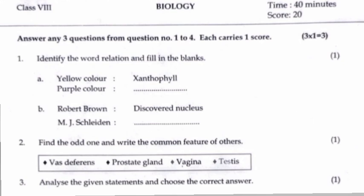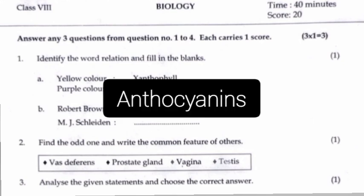Identify the word relation and fill in the blanks. Yellow color: Xanthophyll. Purple color: Anthocyanins.